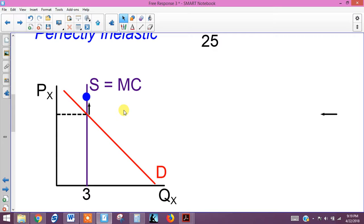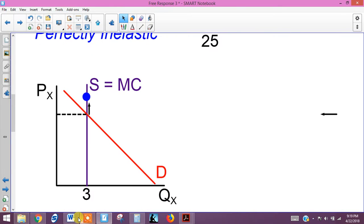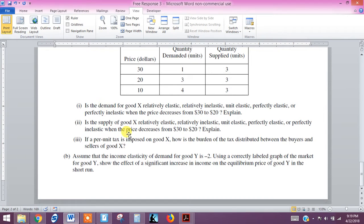So the sellers are going to have to absorb all of the tax burden. It's going to all go on the sellers because of this vertical or perfectly inelastic supply. Okay, so that takes care of 1, 2, and 3. Now part B, we're looking at a different good, good Y.